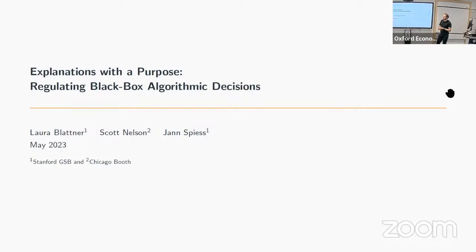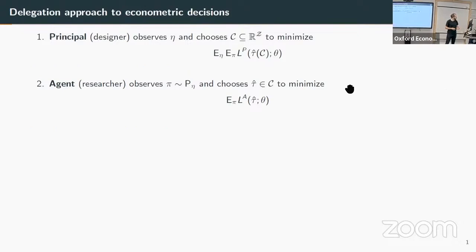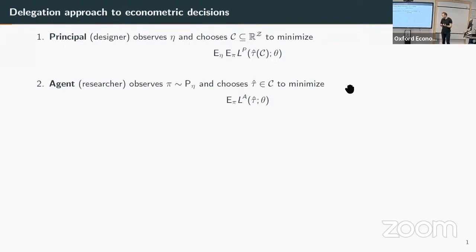Thank you for coming out today. I want to start by briefly connecting what I'm about to do to my intro talk on Monday, where I presented an econometrics paper. I argued there are cases where we may want to model decision making based on data—specifically estimation by an agent I call the researcher—in settings where there may be conflicts of interest. Sometimes when we estimate a quantity we may not be disinterested; we may care about producing a specific result, leading to concerns around p-hacking.